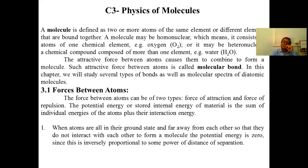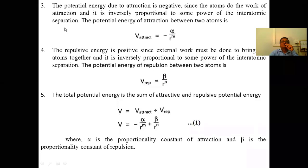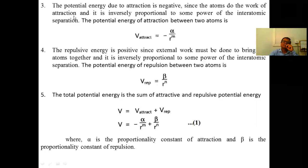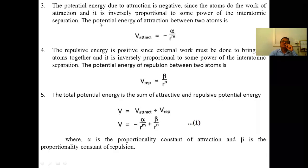The potential energy due to attractive force is negative. If two atoms are coming closer to each other and there is an attractive force between them, the potential energy in this case is negative, since the atoms do not do work against the force of attraction. The attractive potential energy is inversely proportional to some power of the interatomic distance.